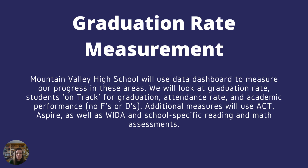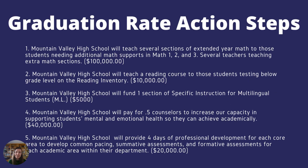Next, they'll need a measurement piece. This measurement piece says that they will use a data dashboard to measure progress in graduation rate, students on track for graduation, attendance rate, and academic performance. Additional measures that could be used are the ACT, the ASPIRE, as well as WIDA and school-specific reading and math assessments. There they've included all the specific measurement tools or metrics they'll use to measure growth toward the goal. For action steps, you again see at the end of each line parentheses with the amount of expenditures required for that action step. Mountain Valley High School will teach several sections of extending your math, teach a reading course for specific students, and so forth. Each one is clearly aligned with their goal and clear on how much it is going to cost.